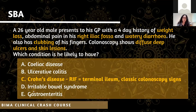The answer is Crohn's. For those unsure, if you weren't certain about the colonoscopy findings, the fact that it's in the right iliac fossa makes you think it's related to the terminal ileum, and Crohn's affects that area of the gut the most. So that's another clue why it's Crohn's over the other option.